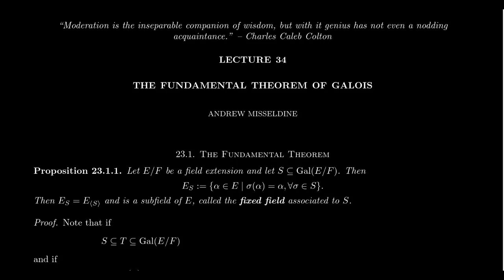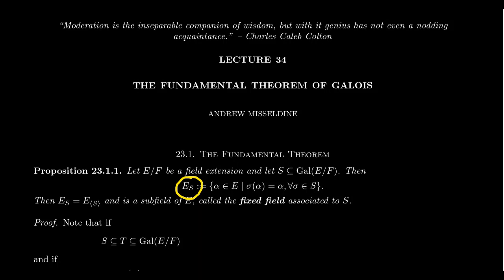Suppose you have a subset S of this Galois group — some collection of automorphisms that fix F. I'm not even claiming there's any algebraic structure here; it might not be a subgroup, it might not be a coset. It's just some set of automorphisms. Given that set S, we can define another set: E sub S is the notation we're going to use. There's no universal notation for fixed fields; the notation is even more diverse than for automorphism groups.